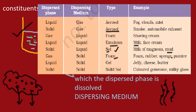Gas-in-solid type is called foam. Liquid-in-solid type is called a gel — examples are jelly, cheese, and butter. Solid-in-solid type is called a solid sol, and there are various examples of such colloids as well.